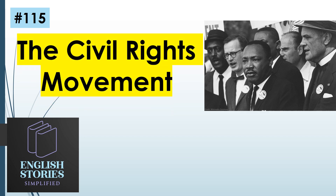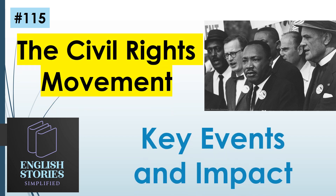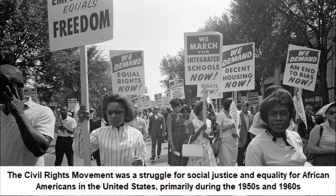The Civil Rights Movement: Key Events and Impact. The Civil Rights Movement was a social and political movement in the United States aimed at ending racial discrimination and securing equal rights under the law for African Americans. This movement, which took place primarily during the 1950s and 1960s, sought to dismantle institutionalized racial segregation and discrimination.